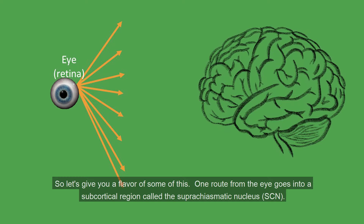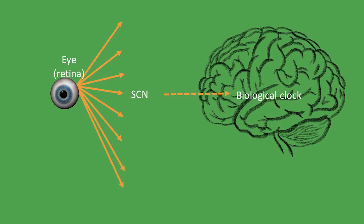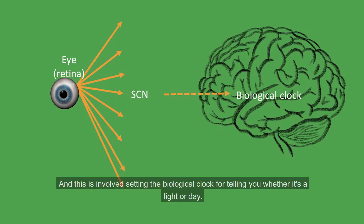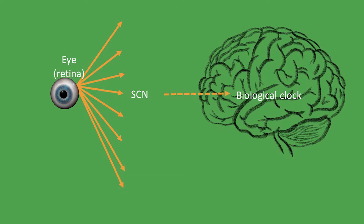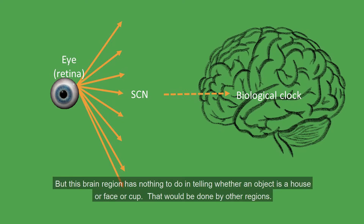To give you a flavour of this: one route from the eye goes into a subcortical region called the suprachiasmatic nucleus, which is involved in setting the biological clock — telling you whether it's light or dark. But this brain region has nothing to do with telling whether an object is a house, a face, or a cup; that would be done by other regions.